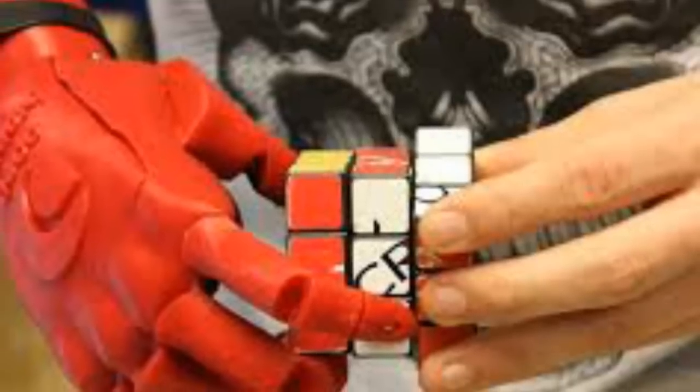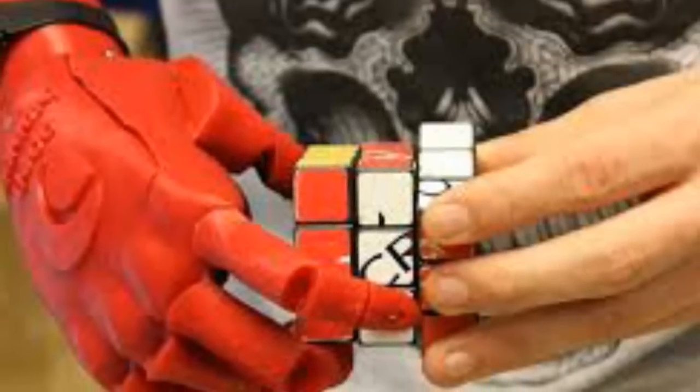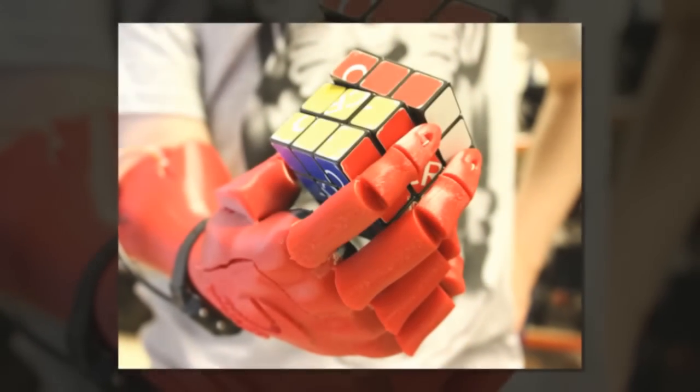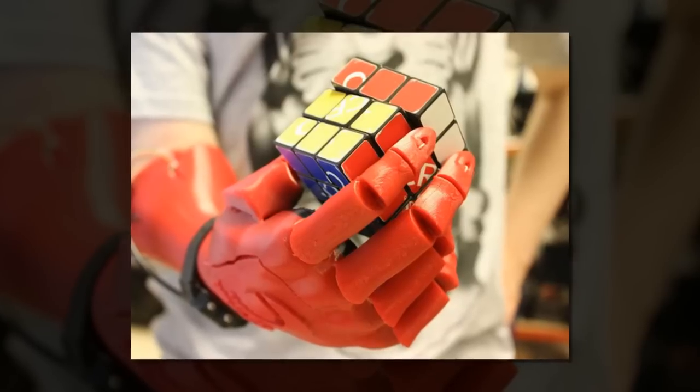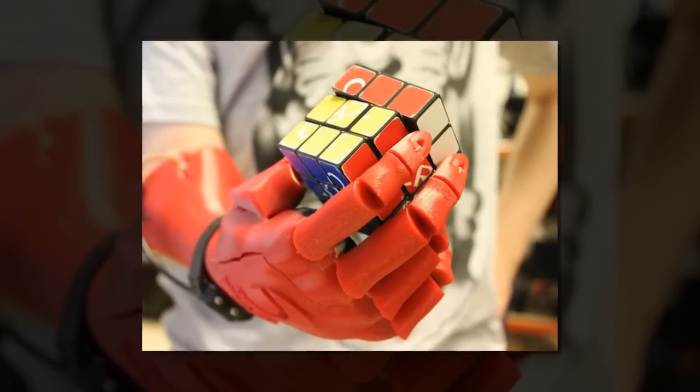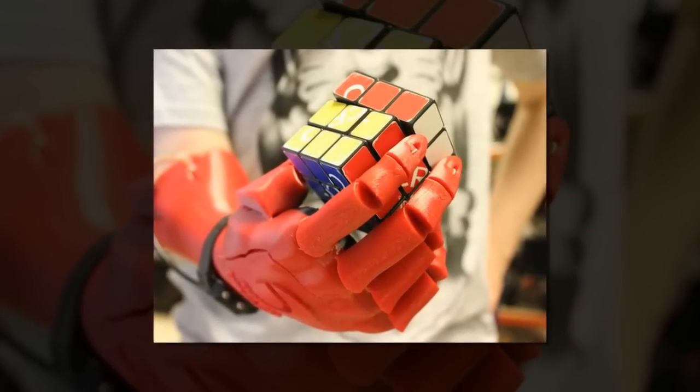Compared to other 3D printed prosthetics available, the dexterous hand has been designed to look much more like a human hand, with smoothed and rounded contours, and design elements such as knuckles.